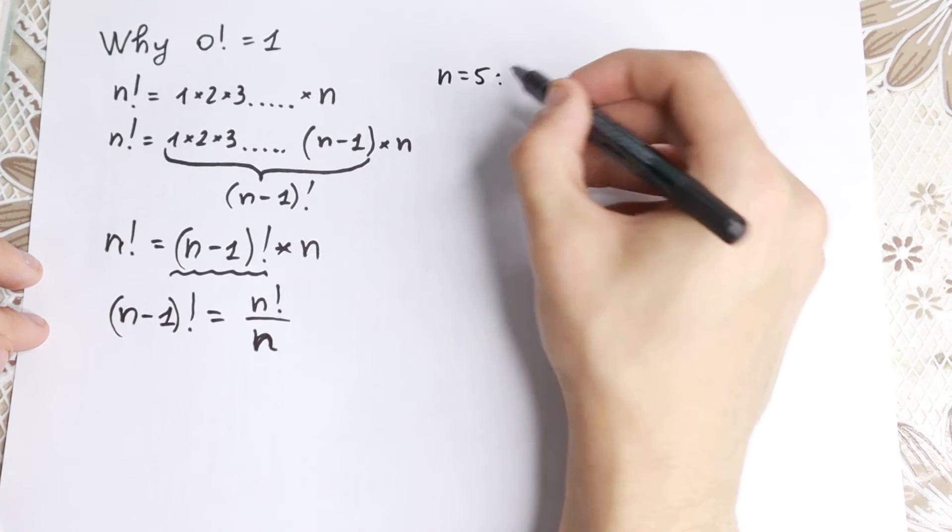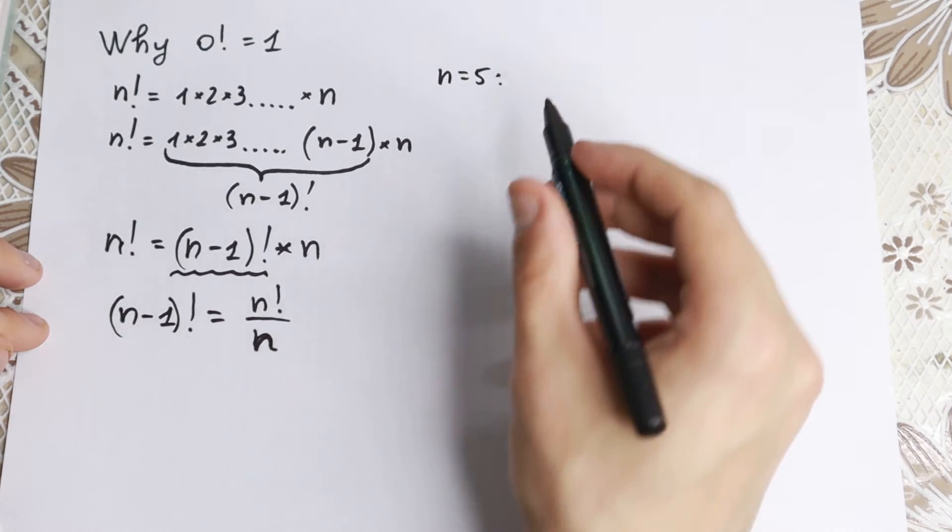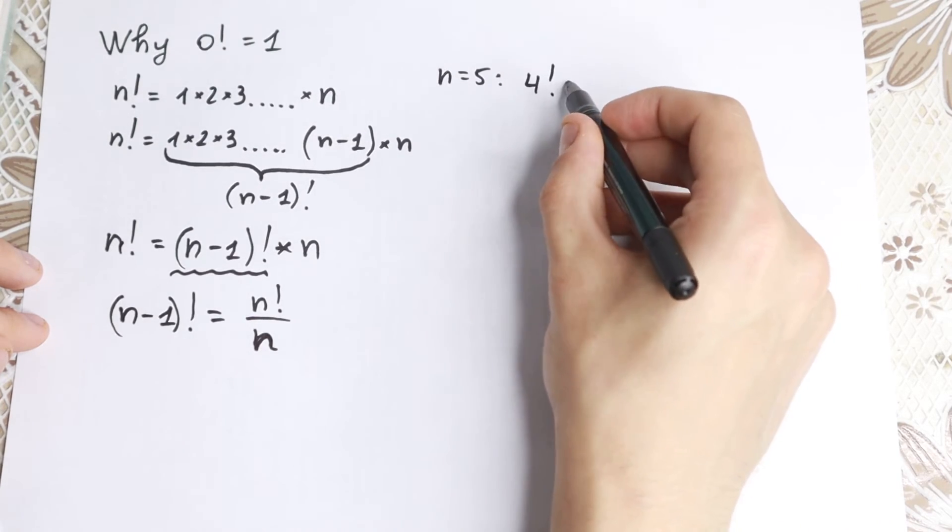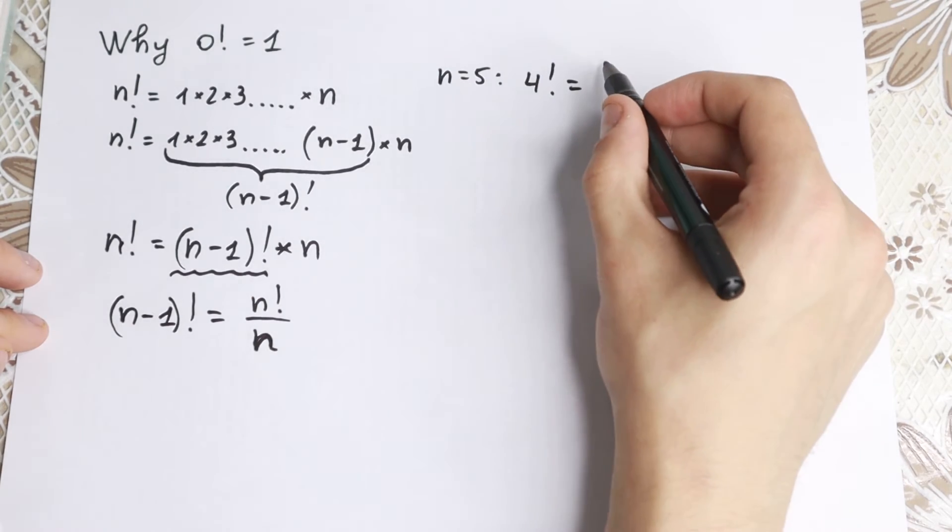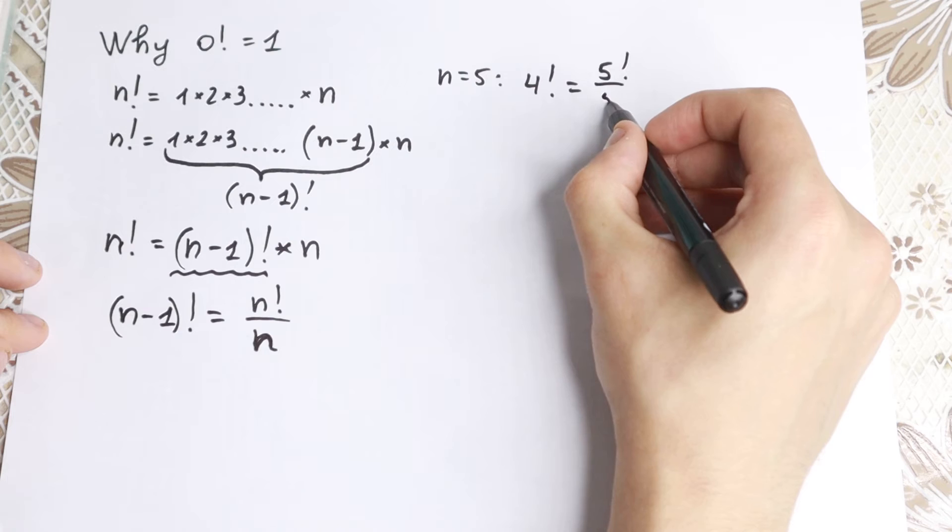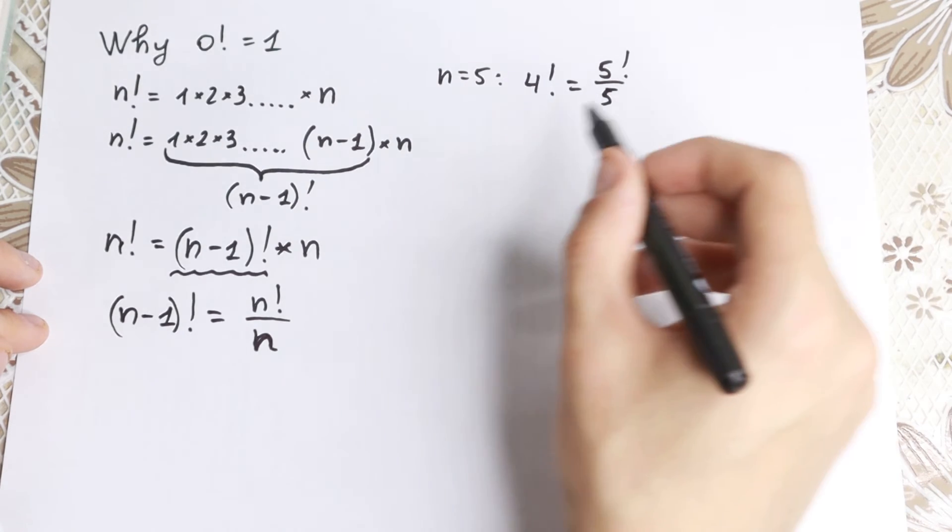If n equal to 5, what we have? We have 5 minus 1, we have 4 factorial, equal to 5 factorial over 5. Let's go further.